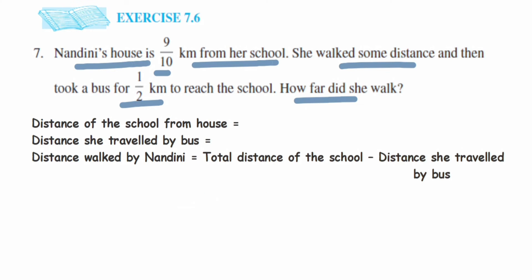So from total distance from this house to school, if we remove distance traveled by the bus, we are going to get distance she went by walk. They have given distance of the school from house is 9/10 kilometer and distance traveled by bus is 1/2 kilometer. So distance walked by Nandini will be total distance, which is 9/10 minus distance traveled by bus, which is 1/2.